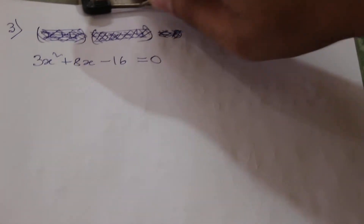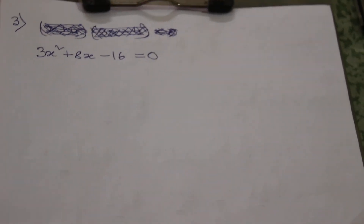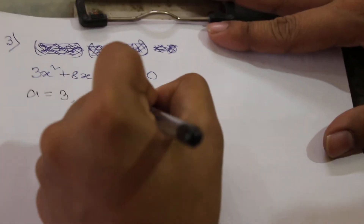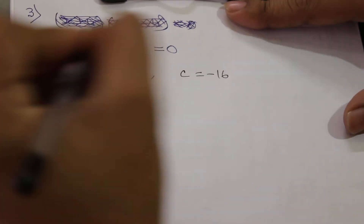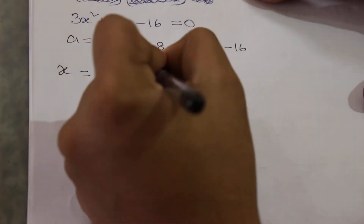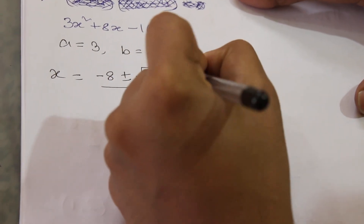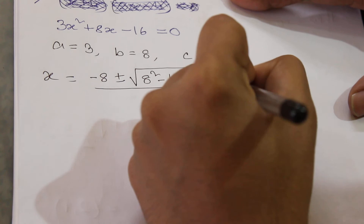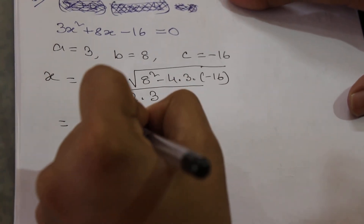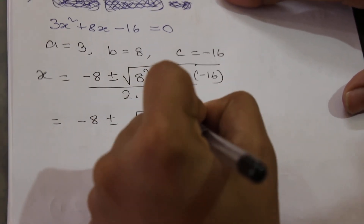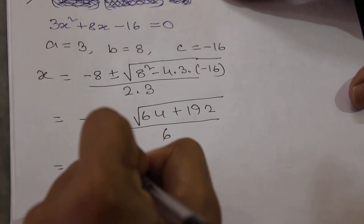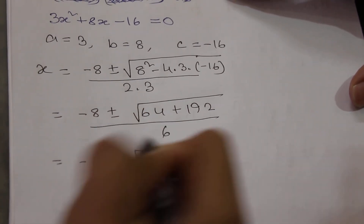The last example is 3x² + 8x − 16 = 0. Here a is 3, b is 8, and c is −16. So x = (−b ± √(b²−4ac)) / 2a = (−8 ± √(64 + 192)) / 6, which gives us (−8 ± √256) / 6.